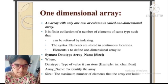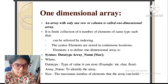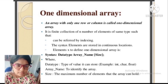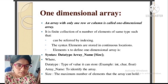Before learning about the one-dimensional array, we need to know what an array is and how many types there are. An arrangement of objects, pictures, or numbers in rows and columns is called an array. Arrays are used to represent multiple data items. There are three types: one-dimensional array, two-dimensional array, and multi-dimensional array.